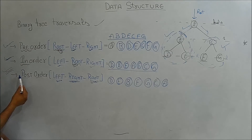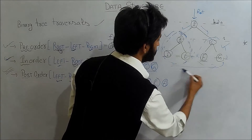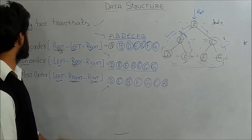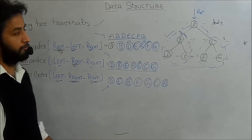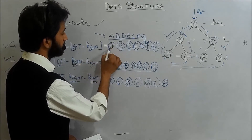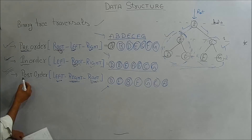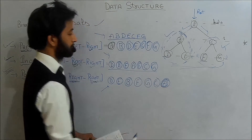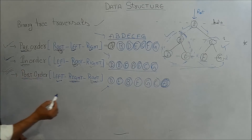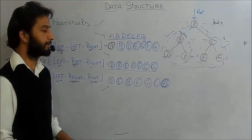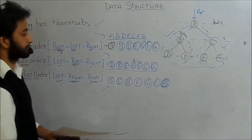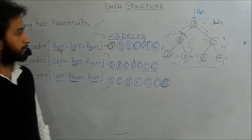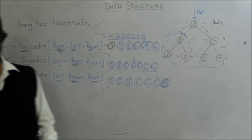To summarize: in pre-order traversal of a binary tree, the root node is always at the first position. In post-order traversal, the root node is always at the last position. In in-order traversal, the root node is always at the middle position. This is all about binary tree traversals. Next we will complete our topics on binary search tree. Thank you.